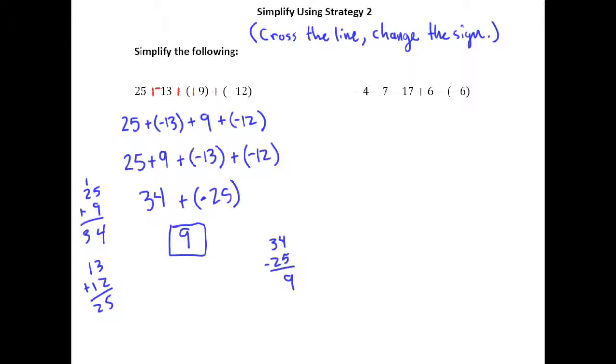All right, so moving on to the next example. Again, we will cross the line, change the sign. So again, remember, this is not a minus sign here. This is a negative because there's no number in front here that you could be taking 4 away from. So this is just a negative 4.